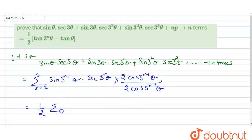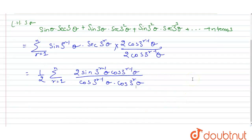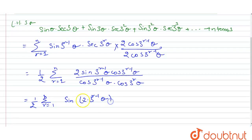Here we write 1/2, r equals 1 to n, of 2·sin(3^(r-1)θ)·cos(3^(r-1)θ) divided by cos(3^(r-1)θ)·cos(3^r θ). Now this becomes sin(2·3^(r-1)θ) because it is the double angle formula.